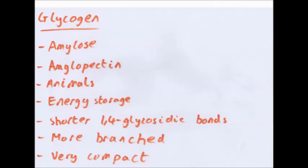In animals, you have a very similar thing. Glycogen, sometimes referred to as animal starch. Yet again, amylose, amylopectin, found in animals, perhaps a little starch granules in the cell. Used for energy storage. Also insoluble. Differences. It has shorter 1,4-glycosidic bonds and is more branched, so it's more compact. Than in plants. That's the only difference.